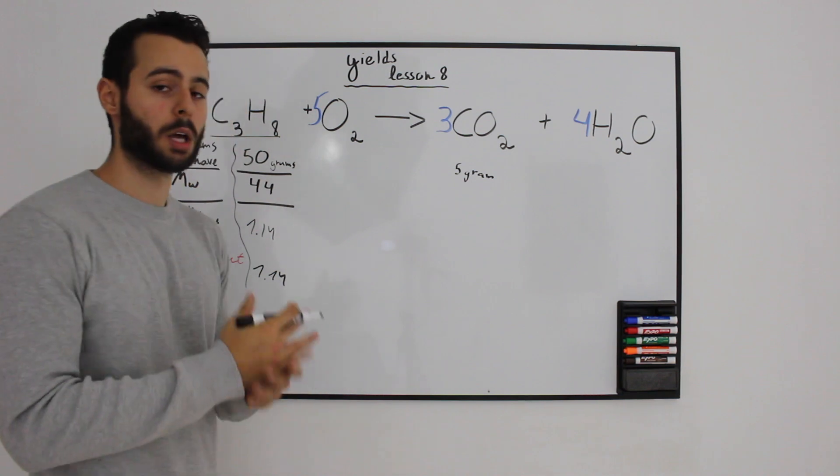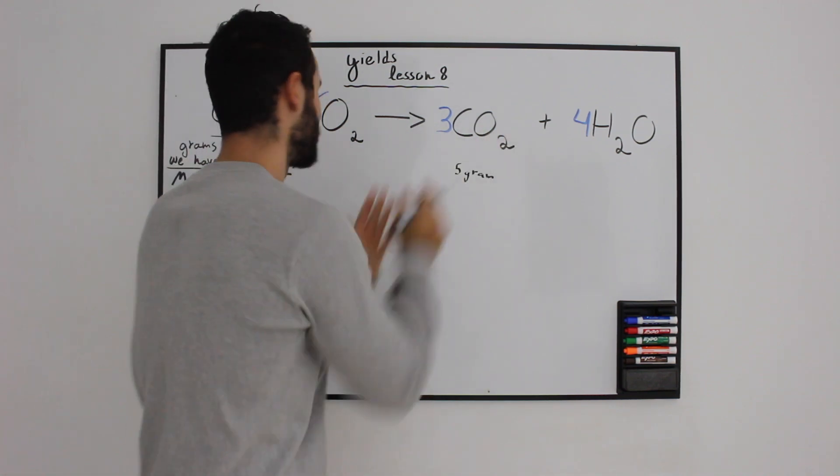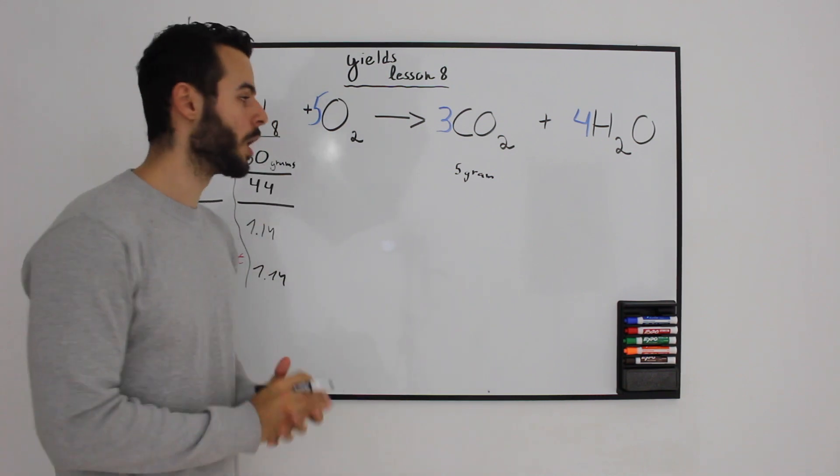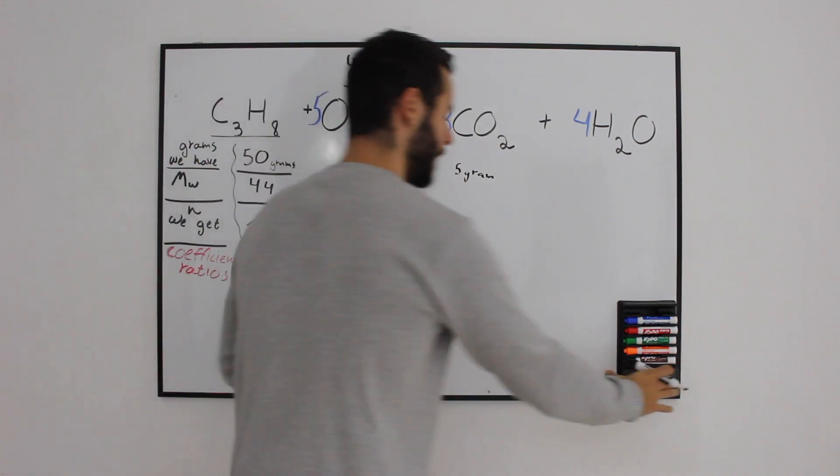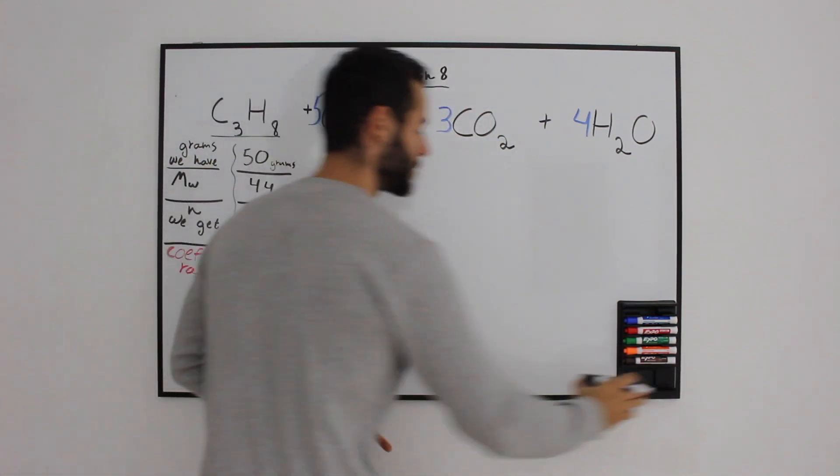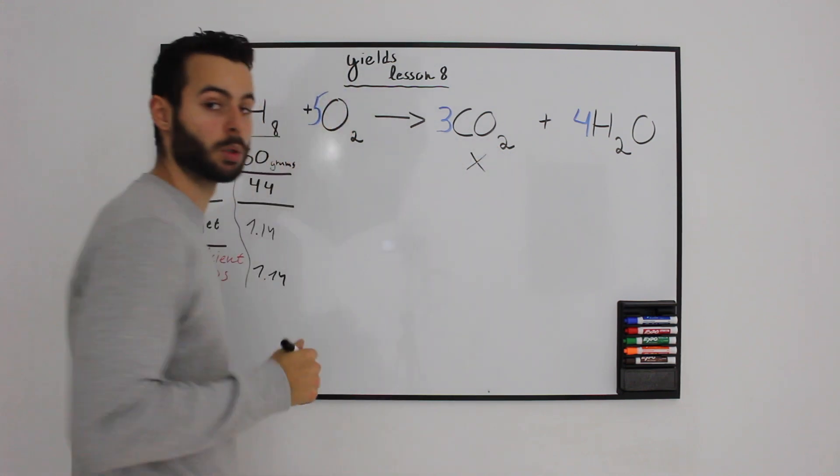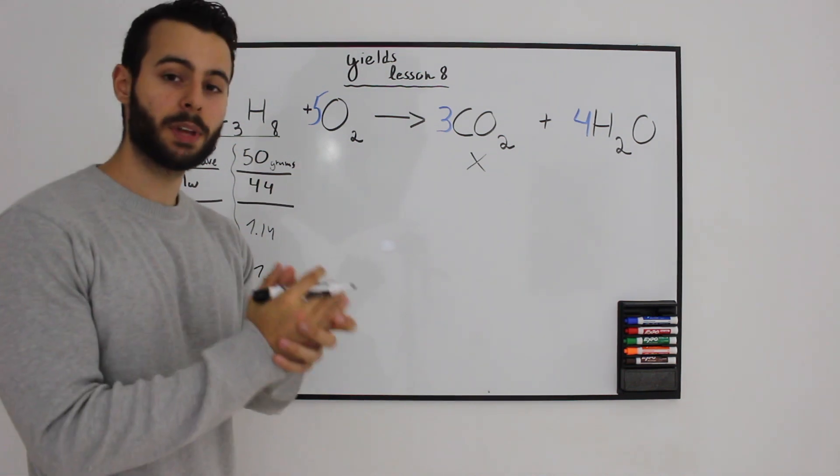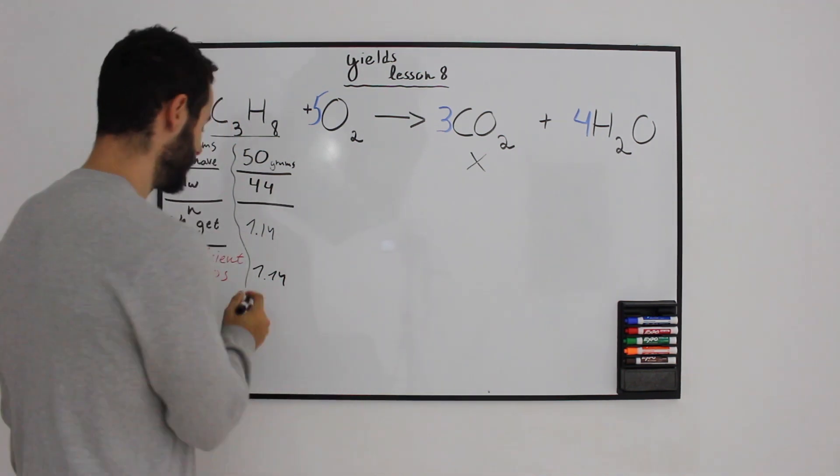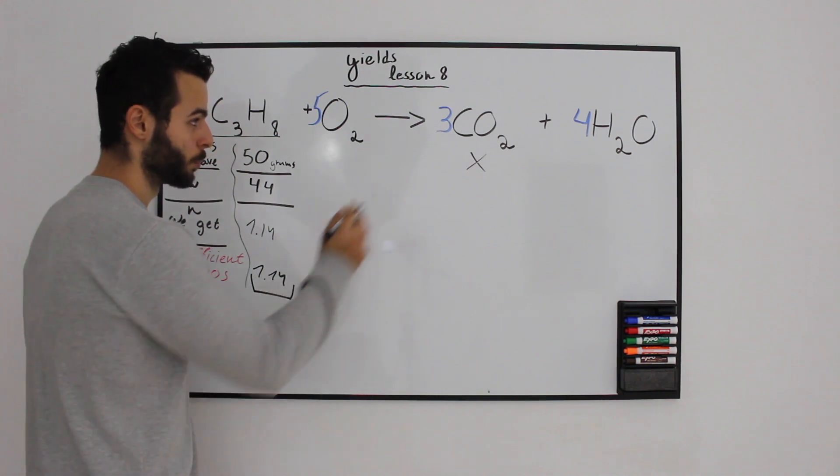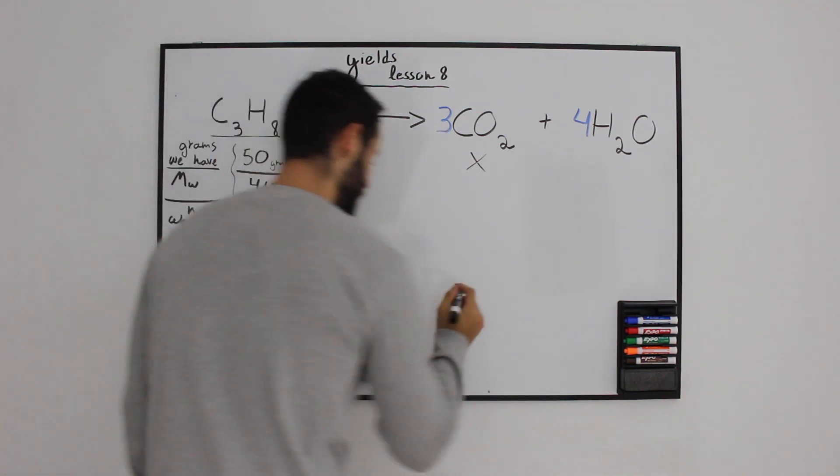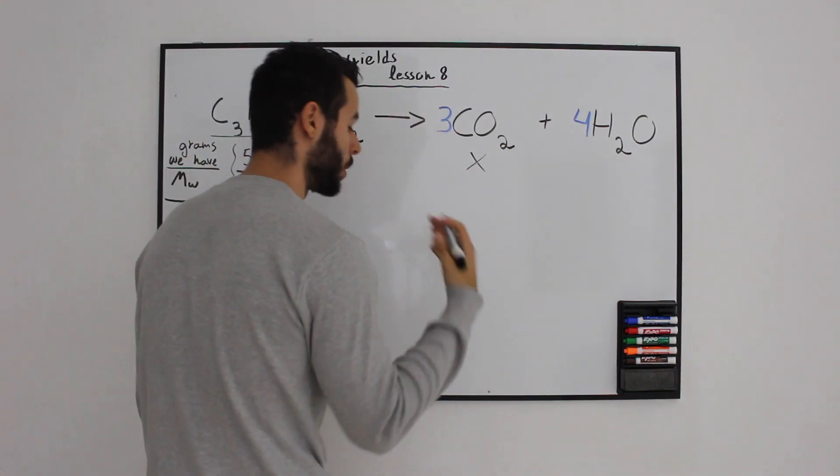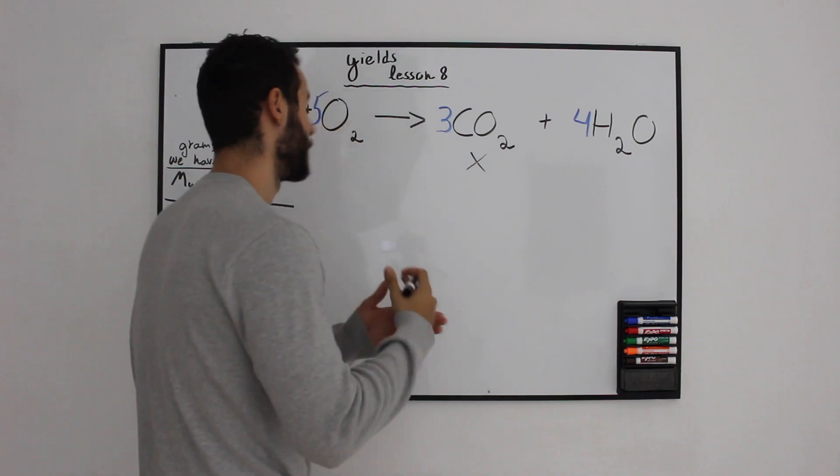What we're going to calculate now is how much carbon dioxide we should get when you have 50 grams of propane in a theoretical yield. What would you actually get when you have 50 grams of propane? Let's calculate it. First, take the reactant and move it underneath the coefficient ratios of carbon dioxide, which is what we want to see.